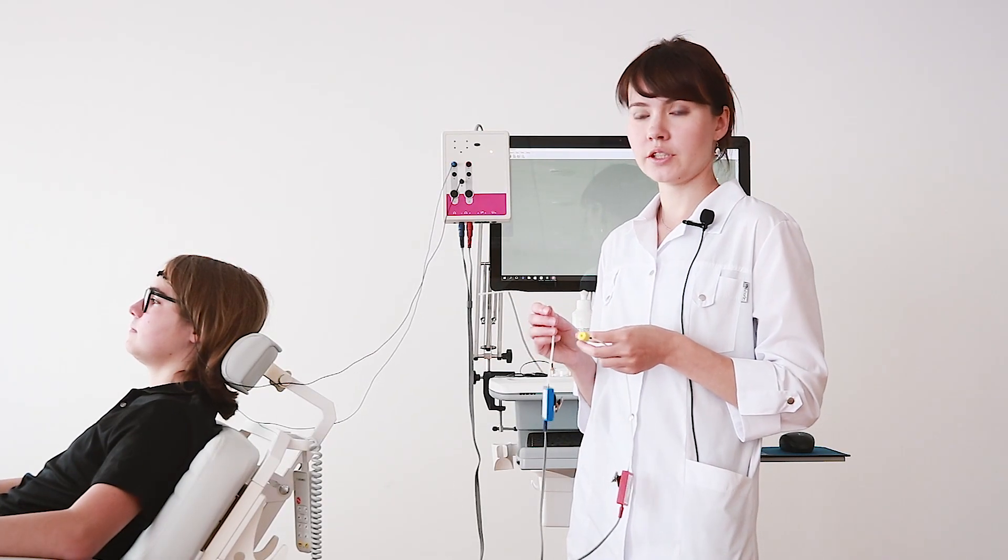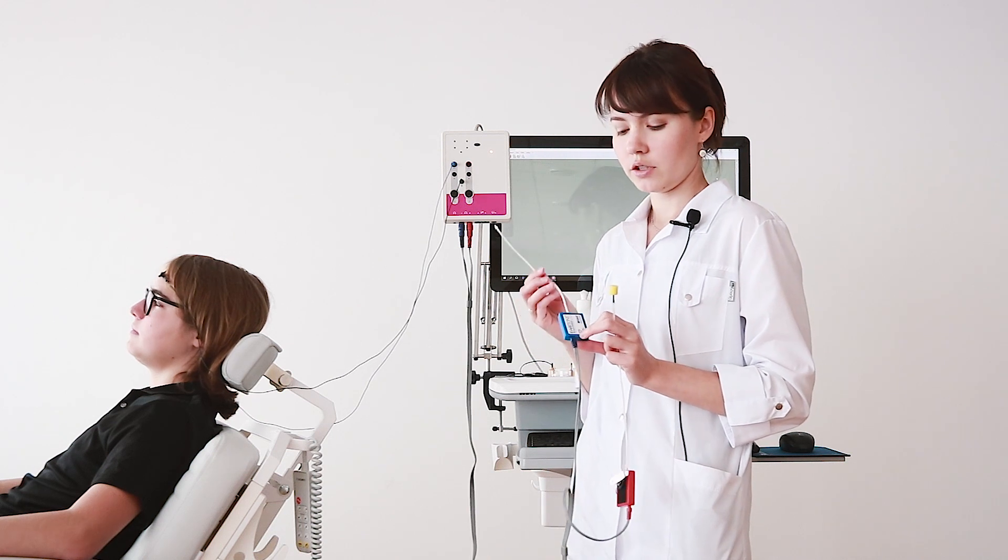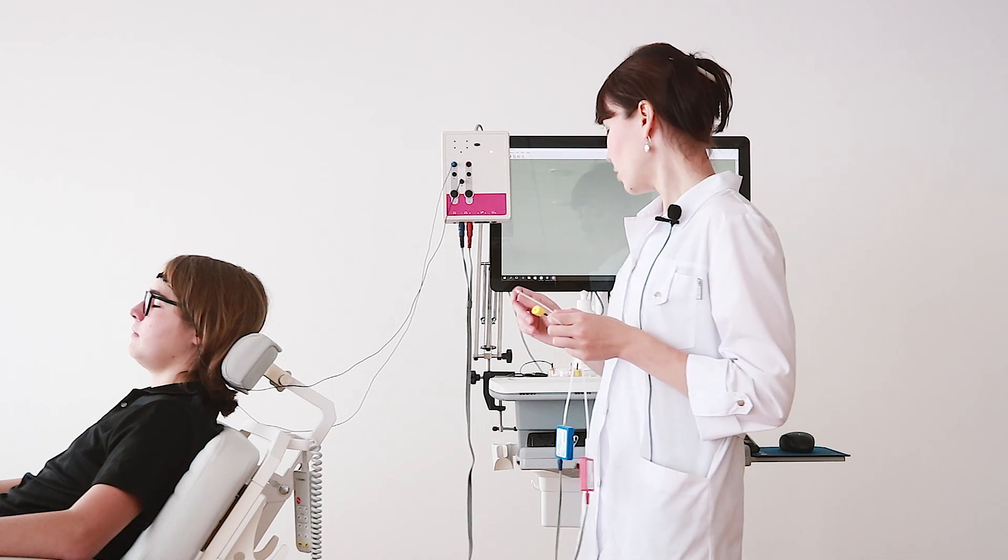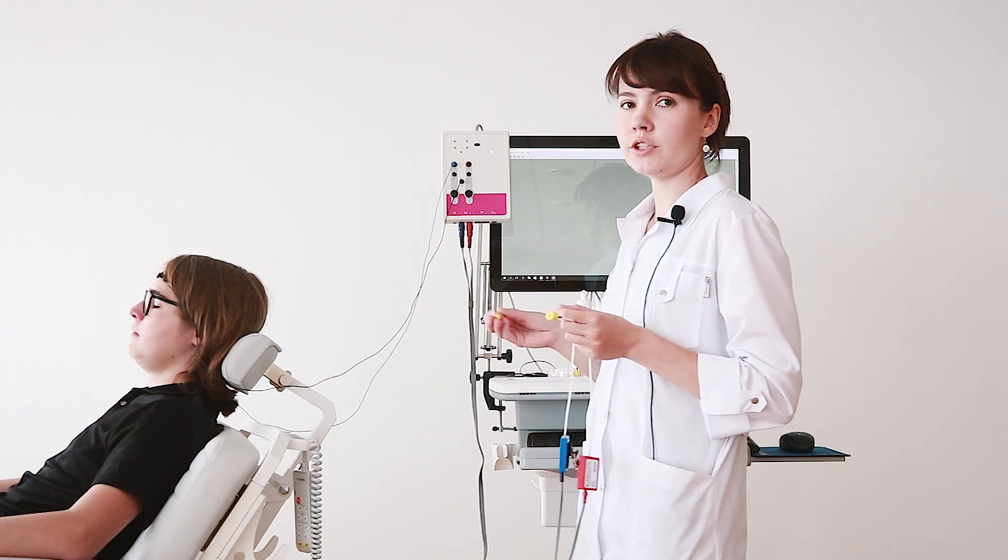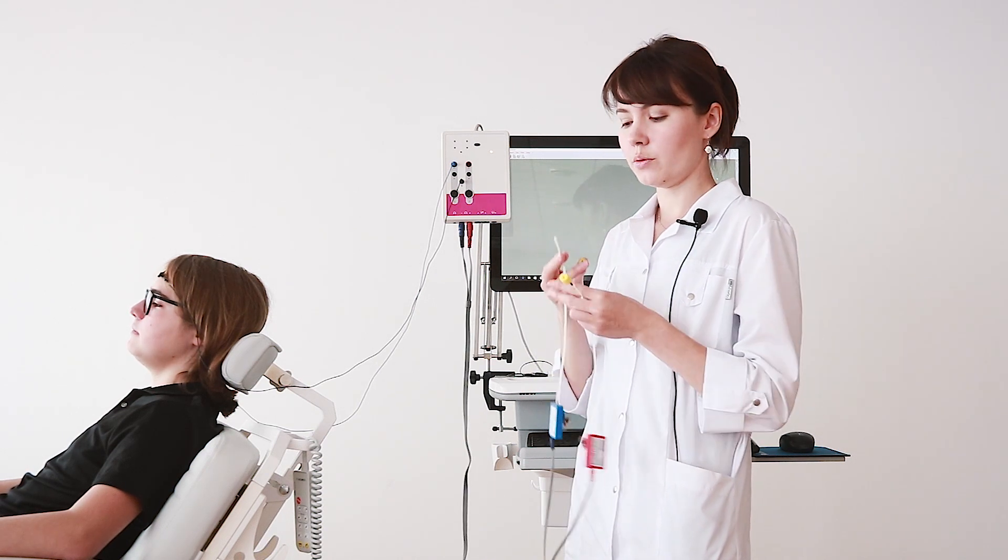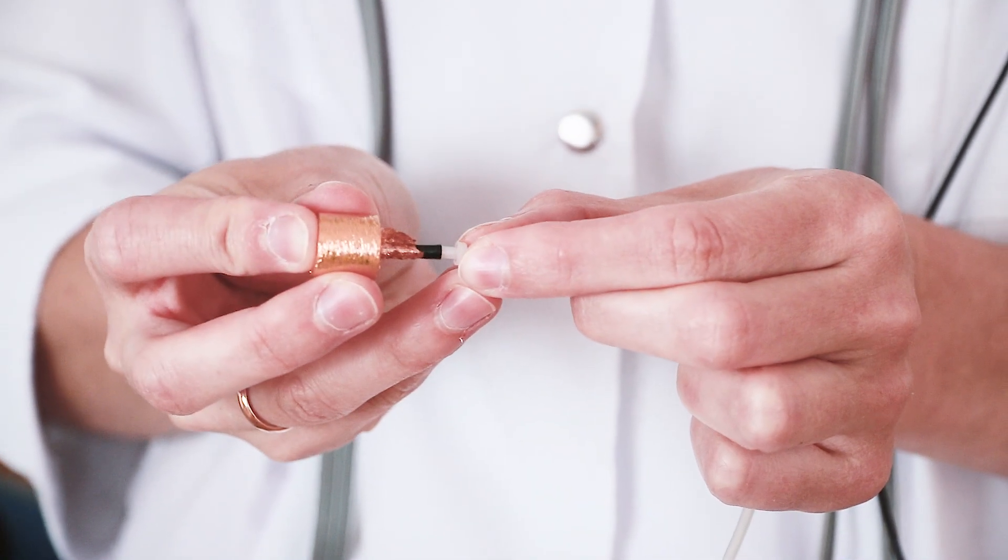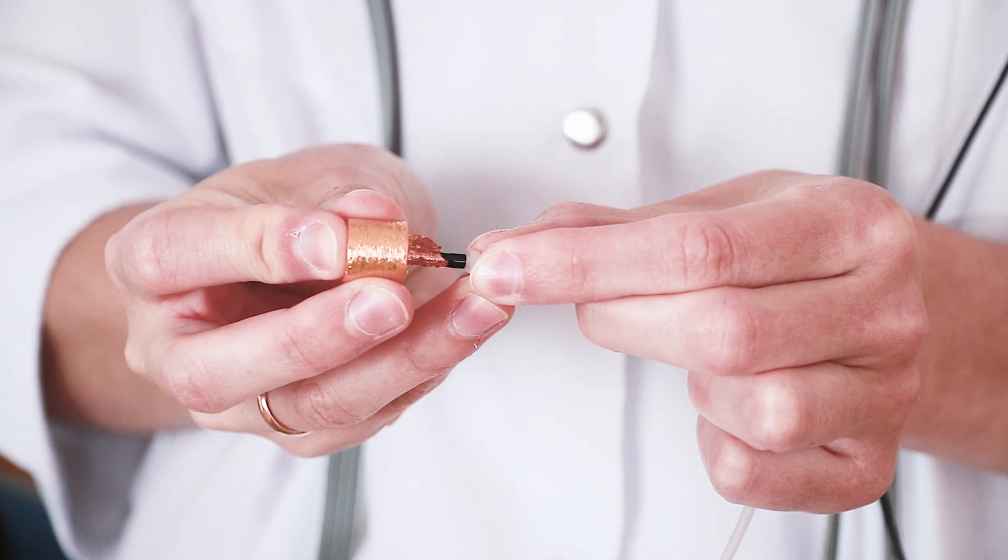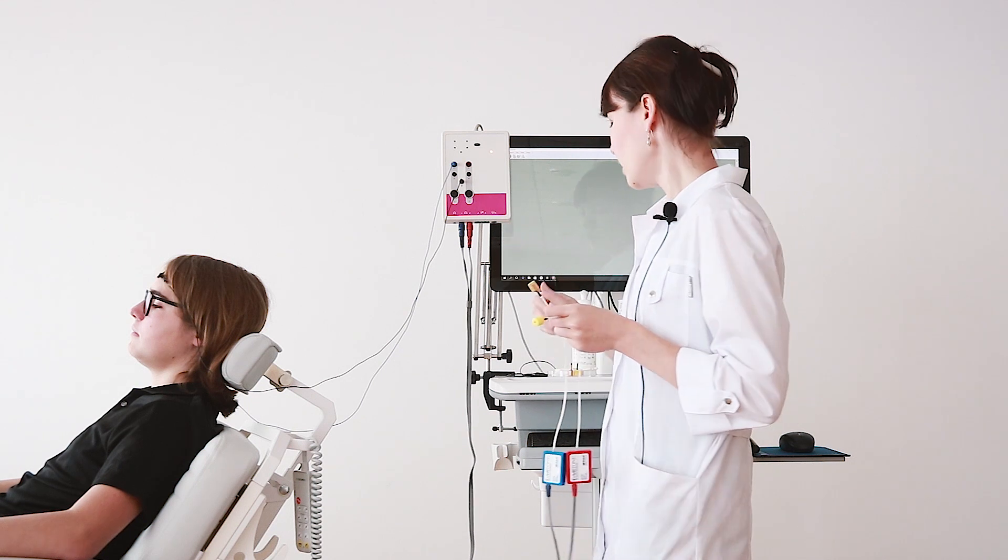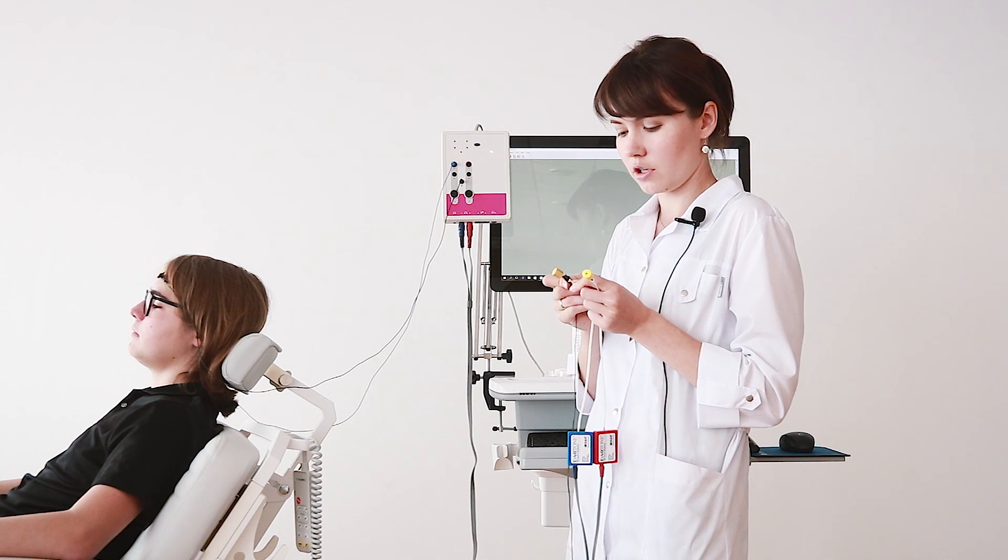In the electrocochleography test, we need to use a special type of auditory stimulator. As you can see, it is insert earphones. Because we will evaluate the state of the left ear, in the left part of our auditory stimulator we connect our active electrode tip-trode. To connect tip-trode to our amplifier, we will use a special alligator connector for cochleographic electrodes.